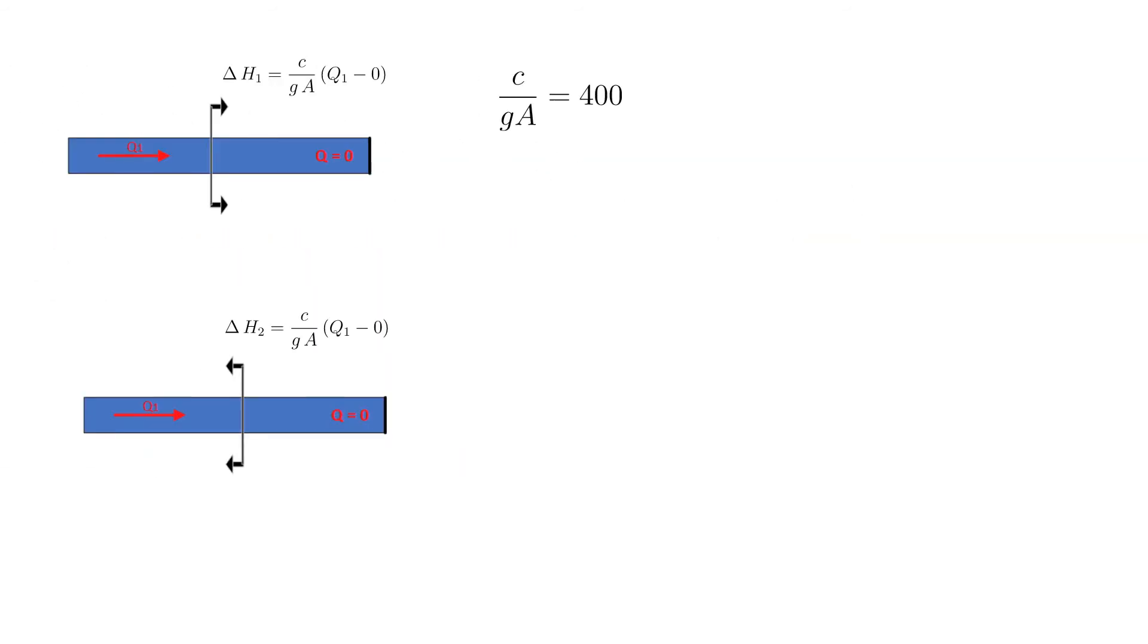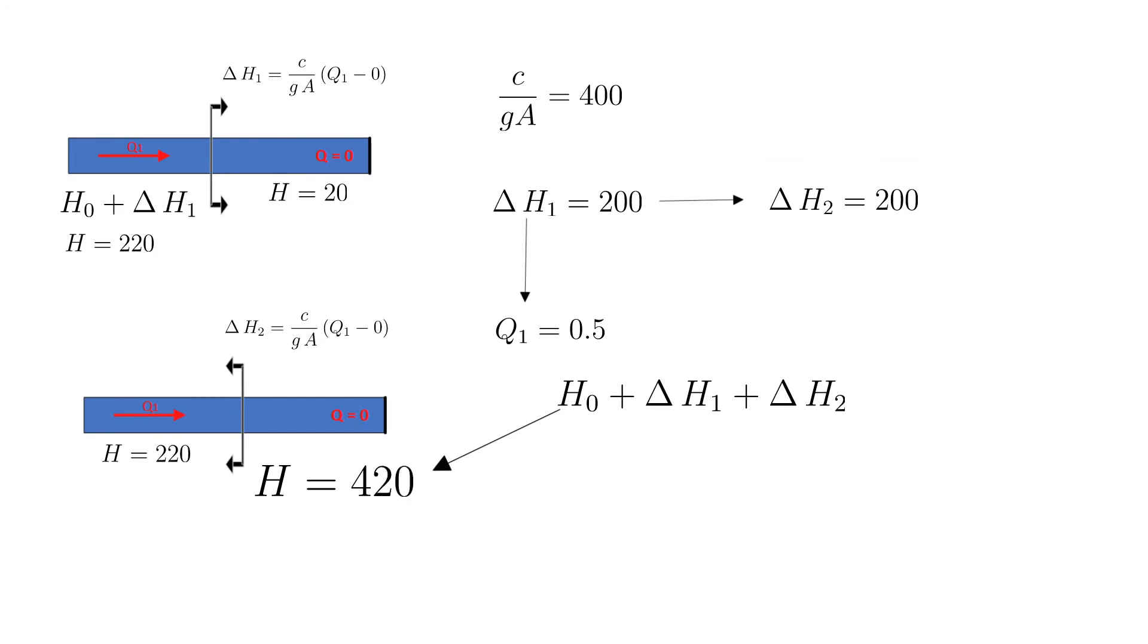Let's add some numbers to provide additional clarity. The initial head is 20, the incoming wave is positive 200. The flow behind the incoming wave Q1 is 0.5. The head behind the incoming wave is 200 plus 20 or 220. The incoming wave reflects off of the dead end with a value of positive 200. The flow behind the reflective wave remains zero. The head behind the reflective wave is the original head with the incoming and reflected waves added. In this example, the head behind the reflected wave is 420.